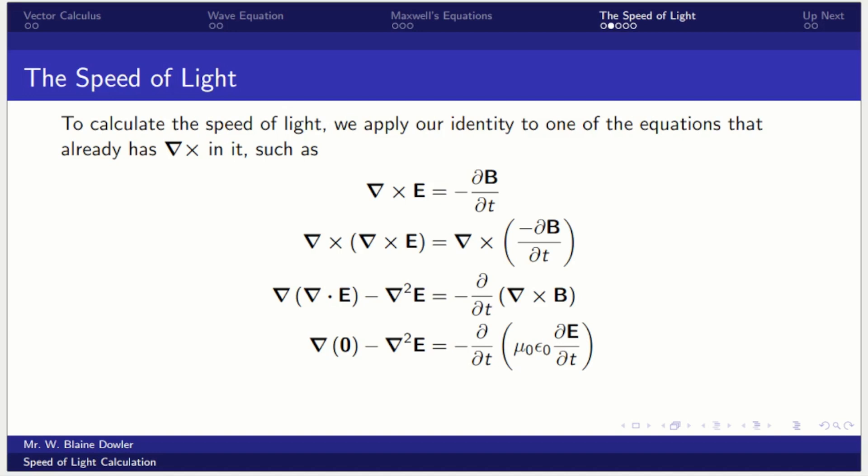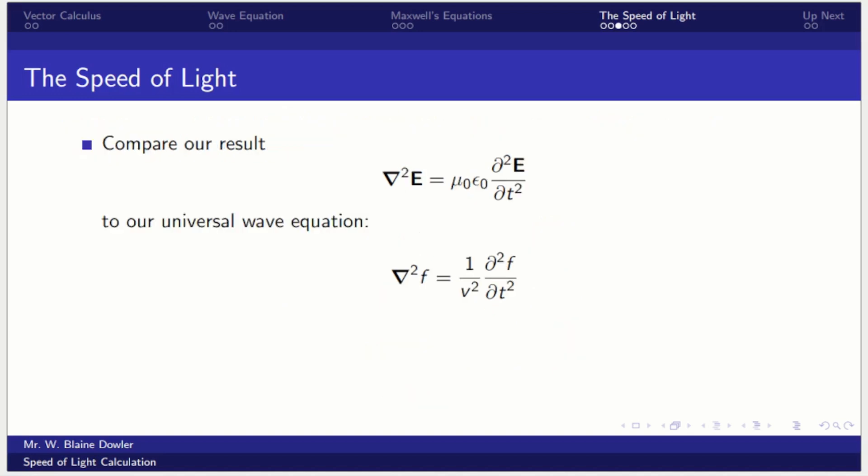The divergence of the electric field is zero when the charge density is zero, so that simplifies one of the terms on the left. And one of the terms on the right we could substitute: the curl of the magnetic field is proportional to the time derivative of the electric field. Simplifying and cancelling the negatives on both sides, we get this expression that has eliminated the magnetic field and is expressed entirely in terms of the electric field. If we compare that result to the universal wave equation, we see that they are the same form provided that the speed of this electric field produced wave is given by this equation here: one over the square root of the product of the magnetic permeability and electric permittivity of free space. This equation is going to turn out to be one of the most important equations in history.